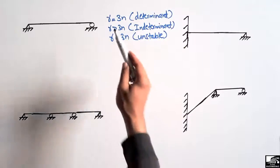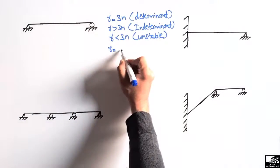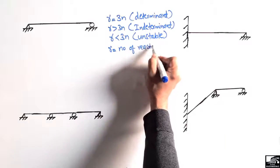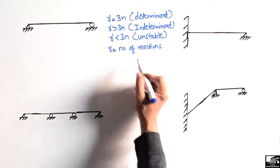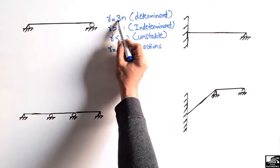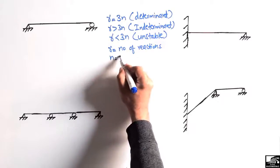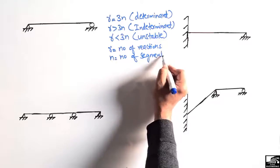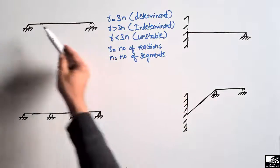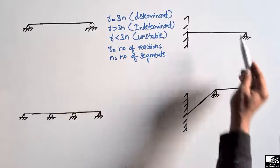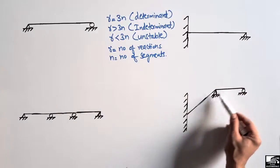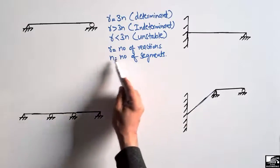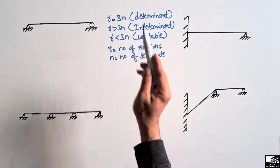R is the number of reactions in a beam. The value 3 is a standard factor. n is the number of segments in the beam — for example, a beam can have one segment, two segments, or three segments. So n is the number of segments and R is the number of reactions.